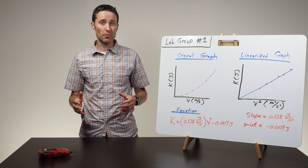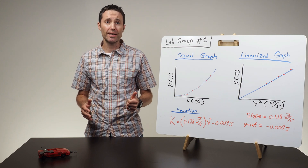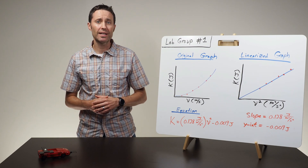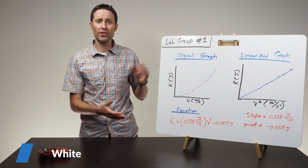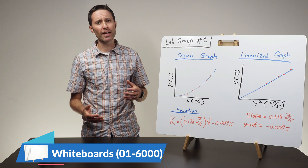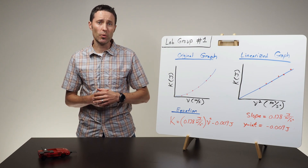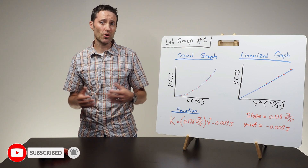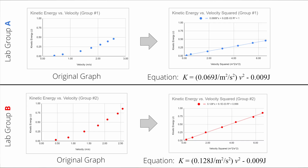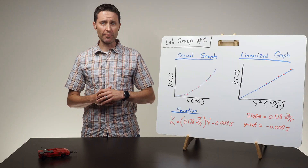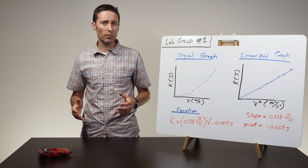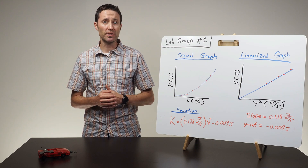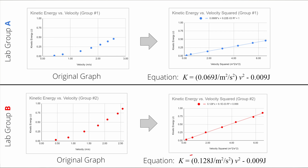To facilitate a whole-class conversation about the relationship between the kinetic energy of a moving object and the object's velocity, have each lab group record their original graph, linearized graph, and resulting equation on a large whiteboard. Have the class circle up so that everyone can clearly see the graphs and equations on each whiteboard. Start by asking students to compare the graphs and equations and identify any similarities or differences they see. Since lab groups use different mass cars, students will be able to identify similar graphical shapes and y-intercept values, but different groupings of slope values. The lab groups who used larger mass cars will have a higher slope value than groups who did not add mass to their car.